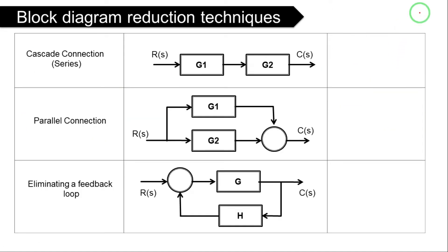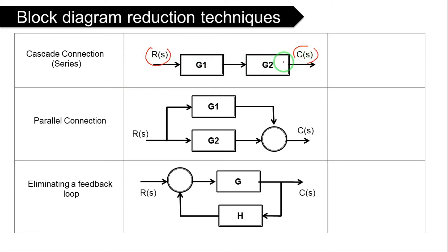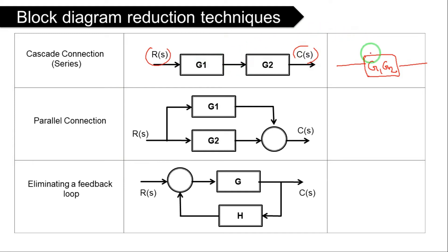Block diagram reduction has around nine to ten basic rules. The first rule is cascade connection, or series connection. If your block diagram consists of two blocks connected in cascade — that is, the output of one is connected to the input of the next — with R(s) as input and C(s) as output, the resultant block will be the multiplication of the two block gains: G1 multiplied by G2. We can replace the two blocks with a single resultant block.